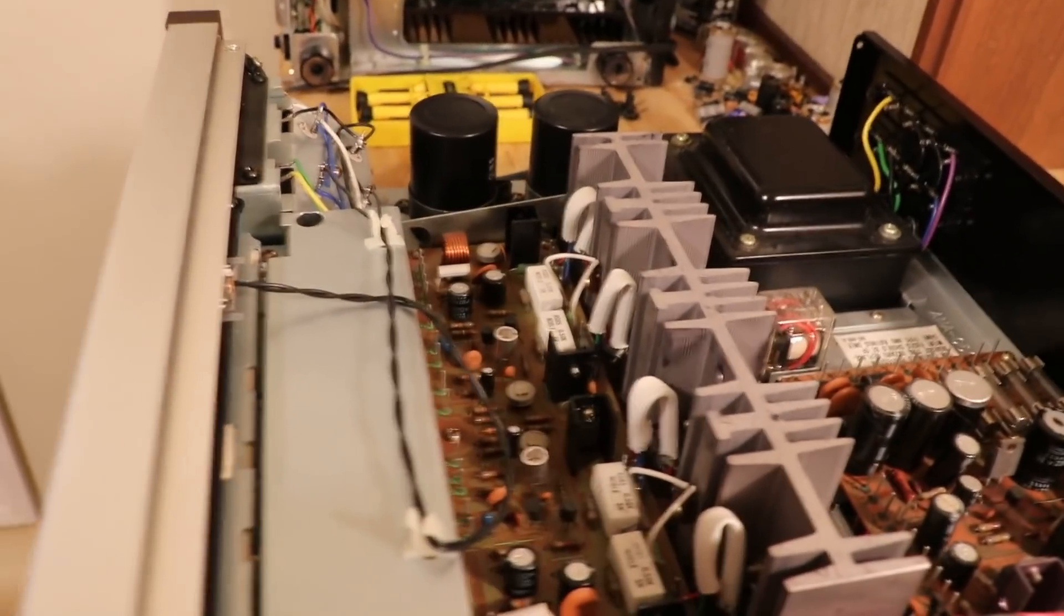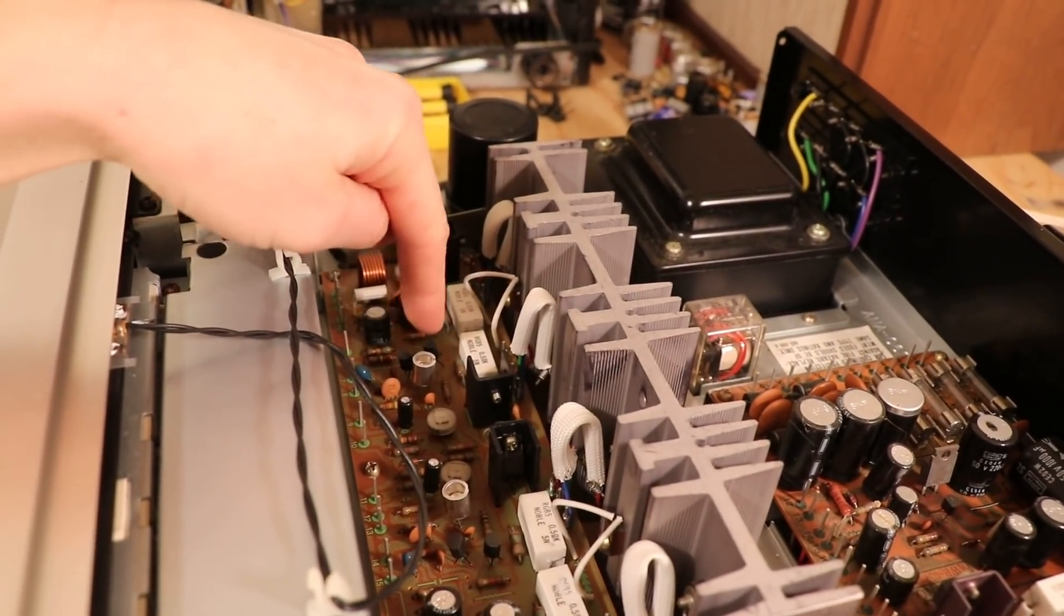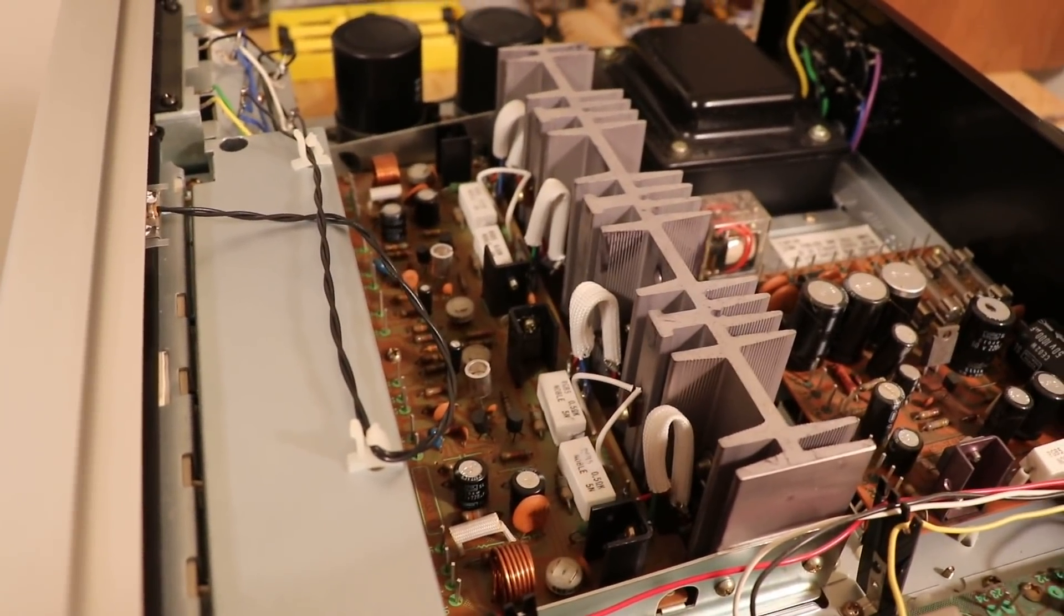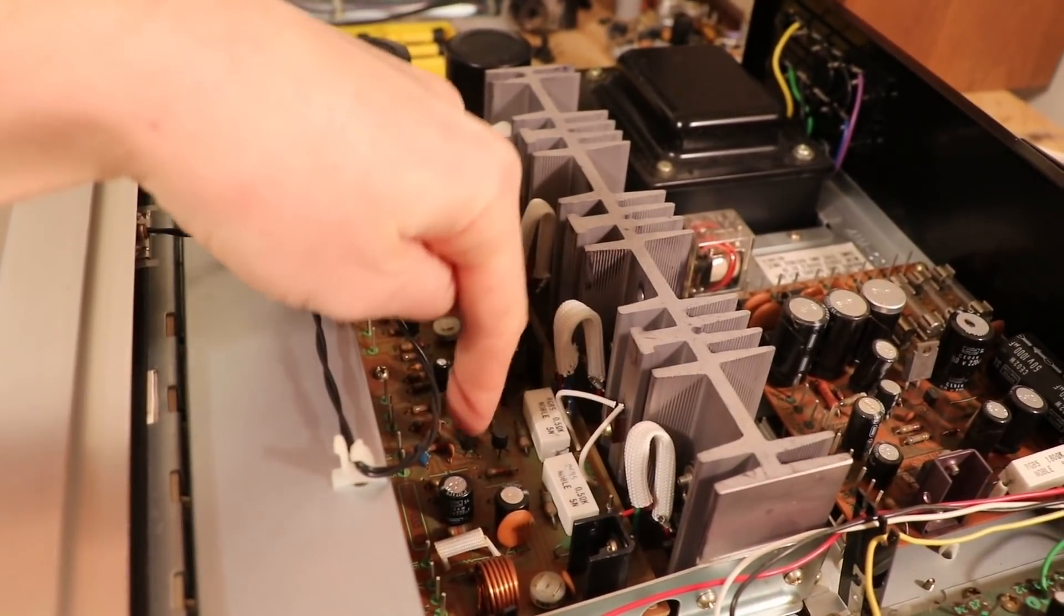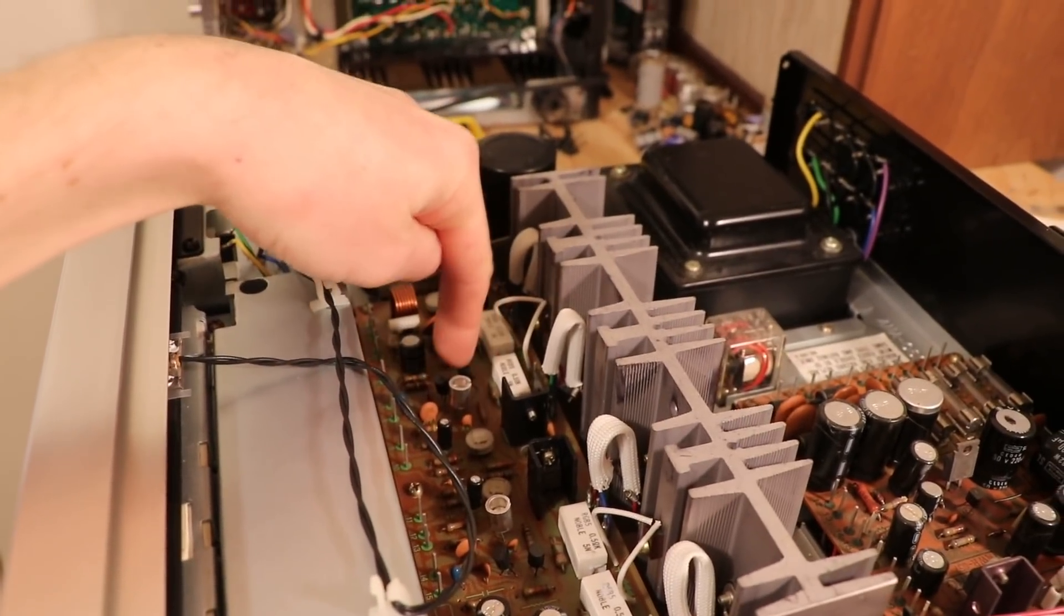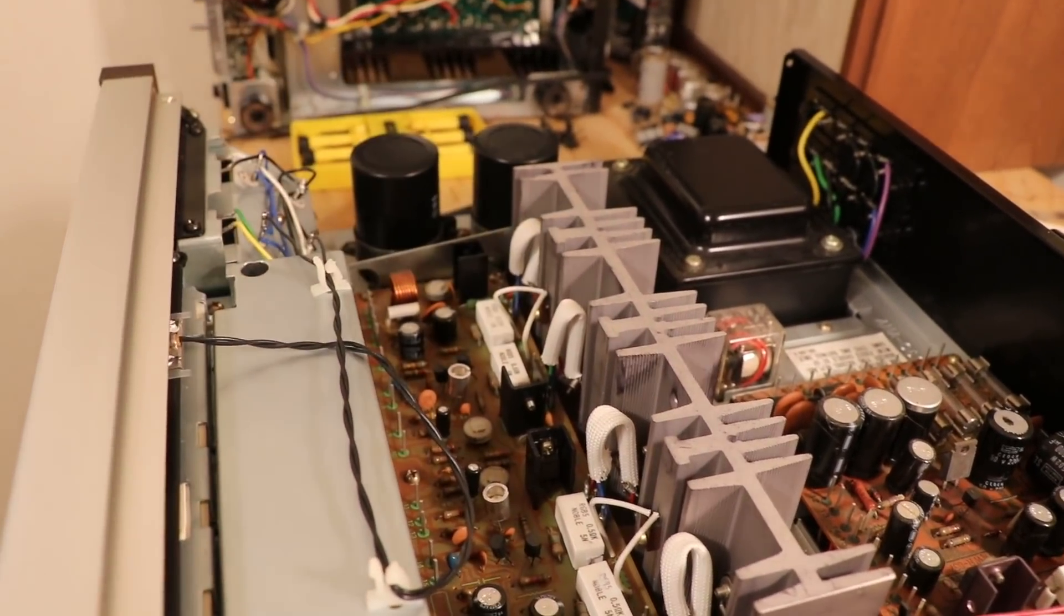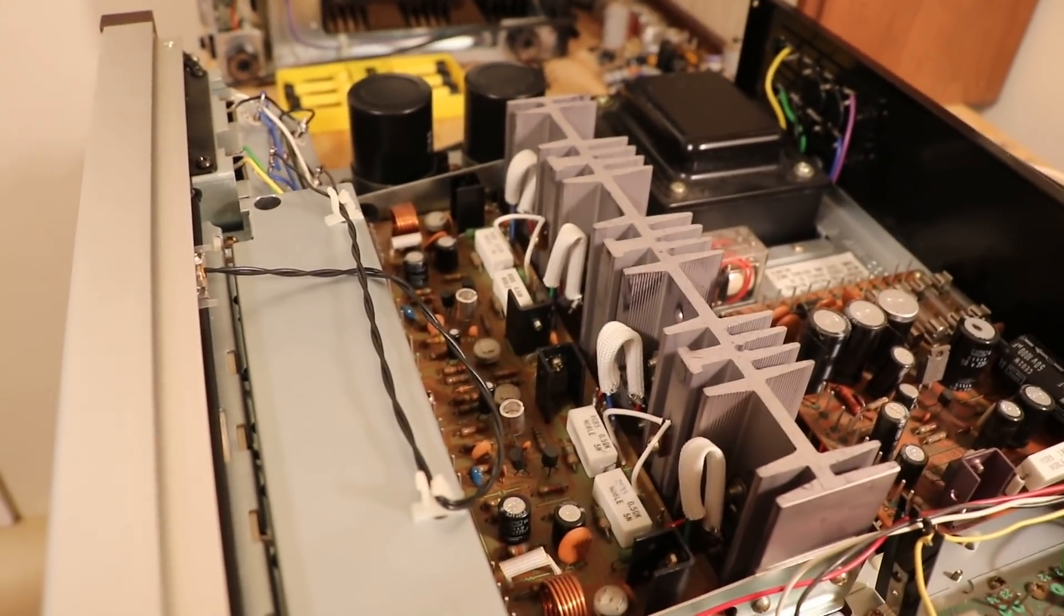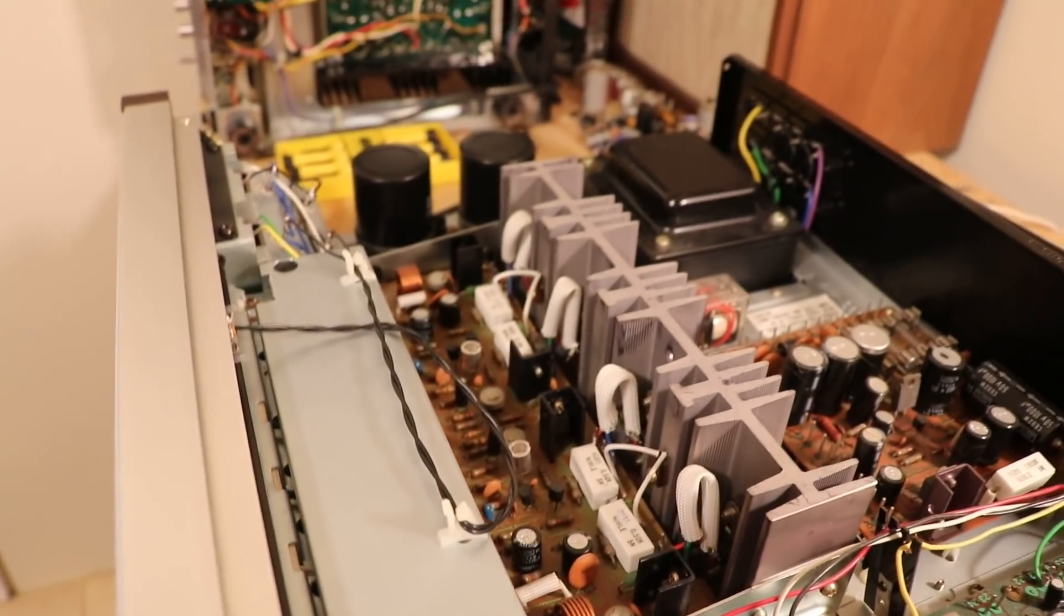Another thing that likes to fail on this board is the differential pairs. Pioneer used two SA-726 transistors for the differential pairs. They are right there and right there. Those two. Those guys can fail as well. That's actually kind of what we just saw on the phono preamplifier in the previous video. If you haven't seen that one, check it out.